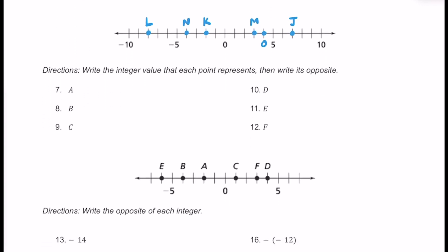Let's take a look at this next section. Here we are going to be writing the integer value — what each point represents — and then we're going to write the opposite of that value. For number 7, we have a. We found a right over here. Here's 0, here's negative 1, here's negative 2. So a is going to be located at negative 2. But it also says to write its opposite, so the opposite of negative 2 is just going to be positive 2.